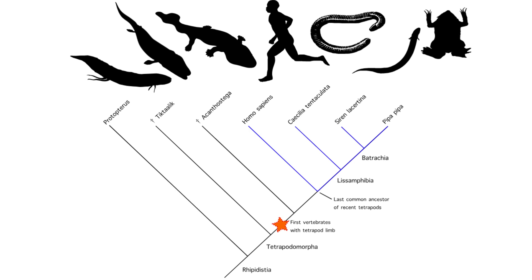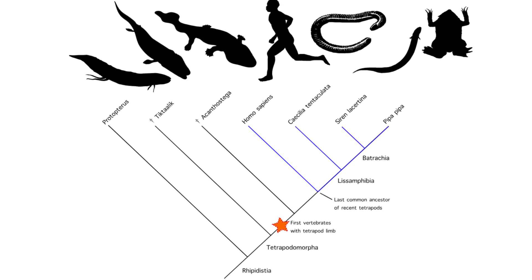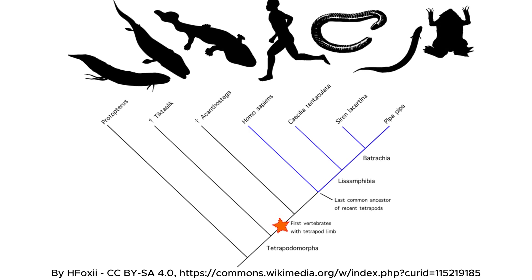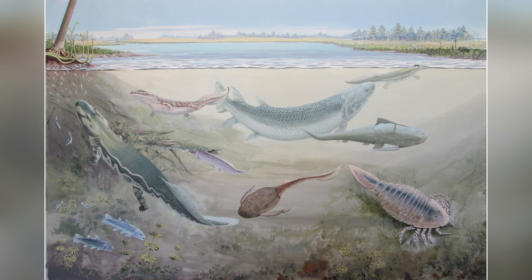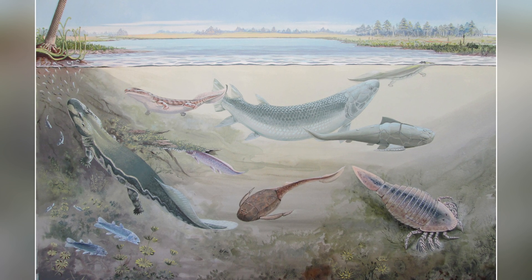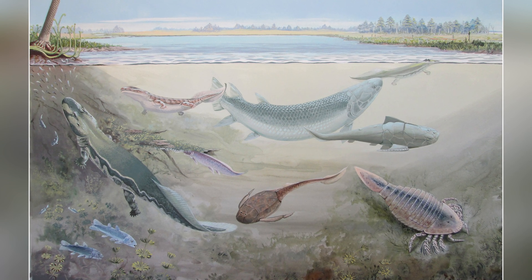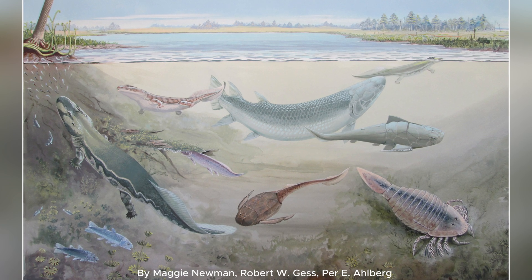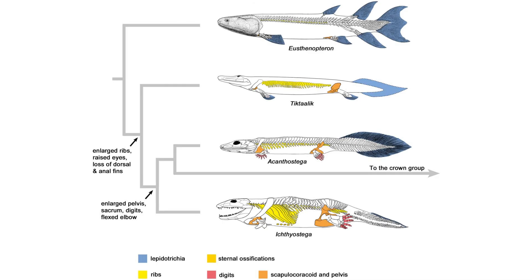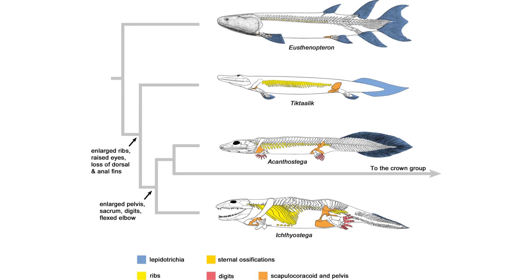As these creatures began to transition from water to land, their fins evolved into limbs better suited for walking. Over time, these limbs developed digits. However, early tetrapods didn't start with five fingers — fossils from species like Acanthostega and Ichthyostega show that some early tetrapods had more than five digits, with up to six or eight fingers in some cases.